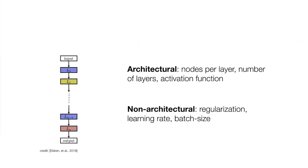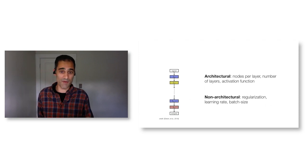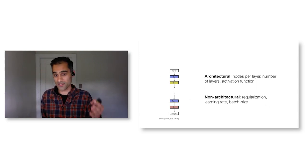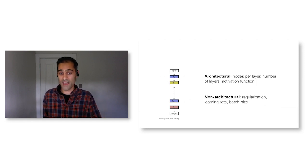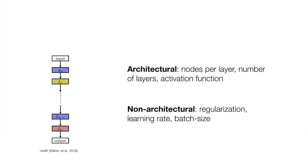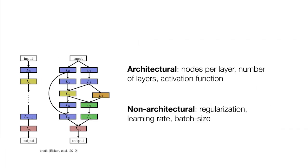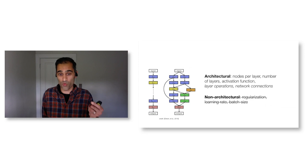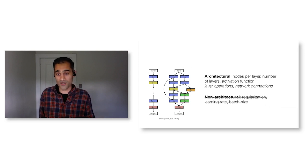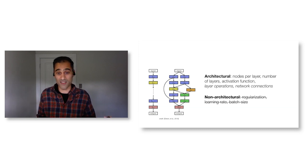That frames us for understanding neural architecture search, which is itself potentially an even more challenging hyperparameter search problem. In hyperparameter optimization, we start with a fixed backbone and consider coarse-grained architectural hyperparameters as well as non-architectural ones. In NAS, we ignore non-architectural hyperparameters altogether and look at much more fine-grained architectural choices—what operation to perform in each layer, the network connections themselves, multiple branches, and skip connections. The complexity is really, really large.